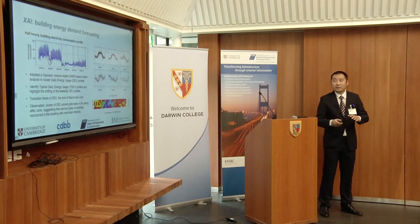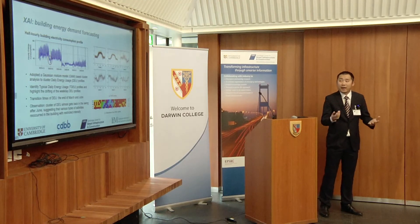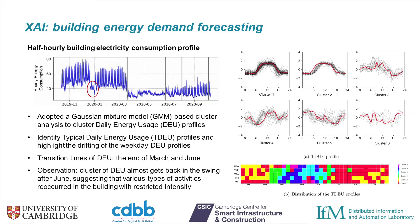The second example is about explainable AI. When we try to forecast energy demand, we use a Gaussian mixture model to cluster the daily energy usage profile. As you can see in this picture, we can clearly see the pattern of change — from pre-COVID, through COVID lockdown, and into the recovery phase. The result is much more straightforward and understandable.